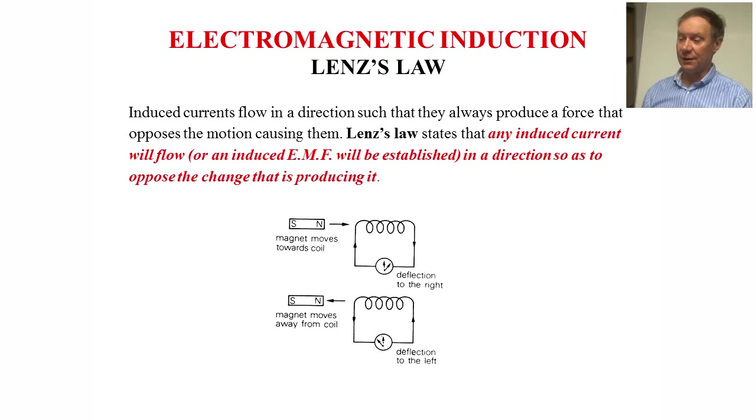Lenz's law gives the direction of the induced EMF and states that any induced current will flow, or an induced EMF will be established, in the direction so as to oppose the change producing it. This is also part of the conservation of energy. So if I put a north pole in at the top diagram, a north pole is created in the coil at that end on the left and the current will be detected to the right. If I then pull the north pole out, the magnet moving away from the coil, the current will go in the other direction.